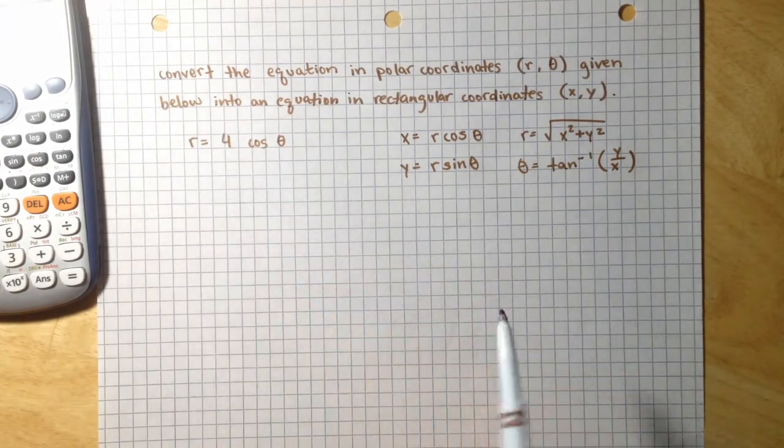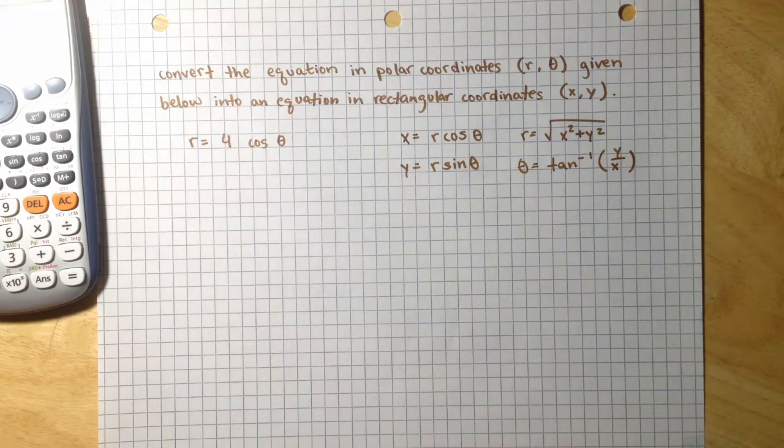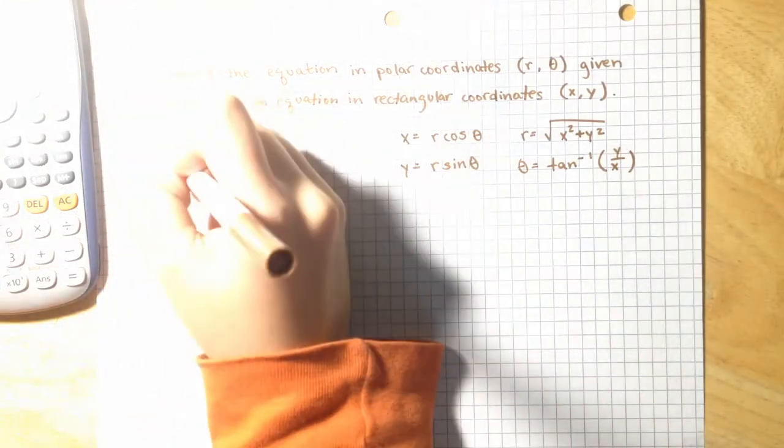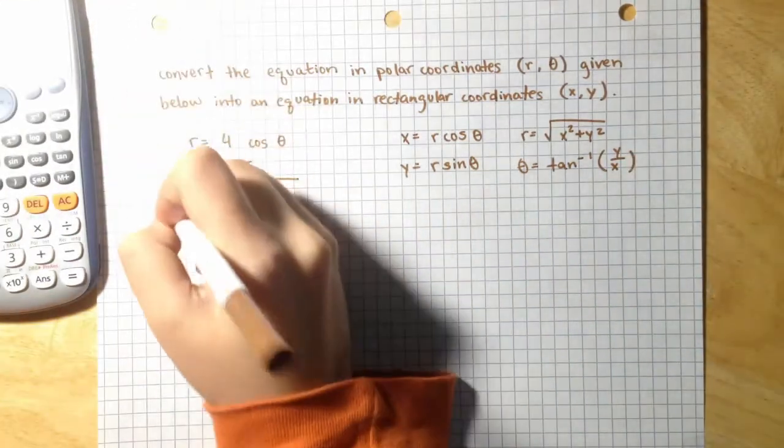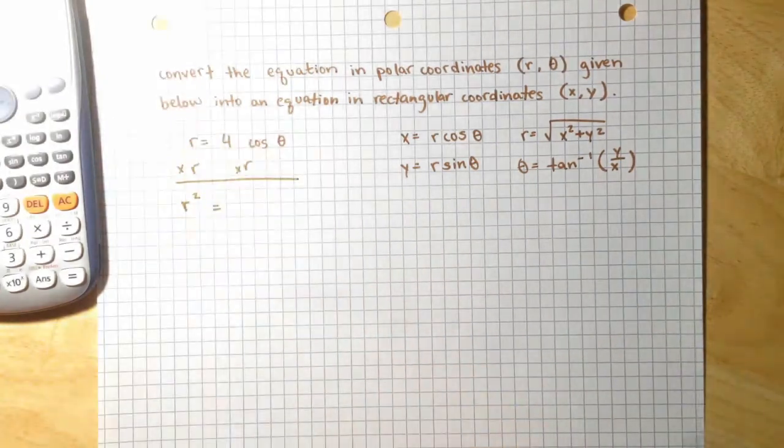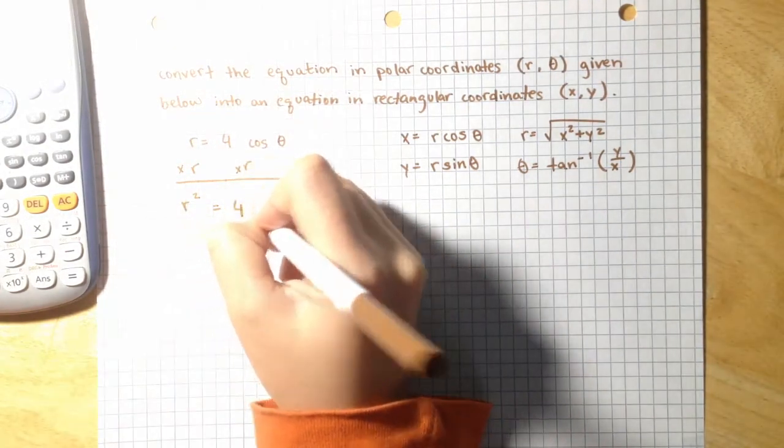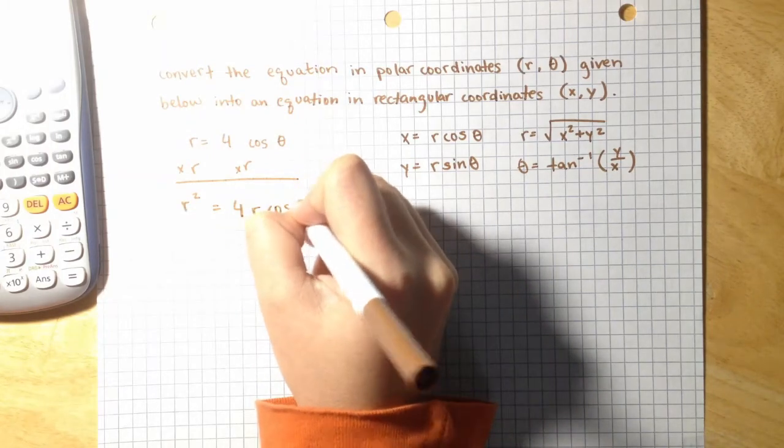So r equals 4 times cosine of theta. What will happen if we multiply both sides by r? Let's see. If we multiply this side by r and we multiply this side by r, we get r squared equaling 4 times r cosine theta.